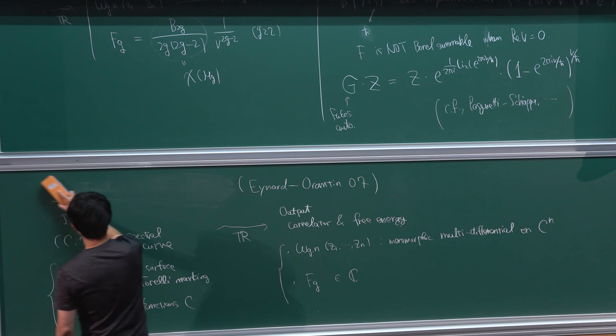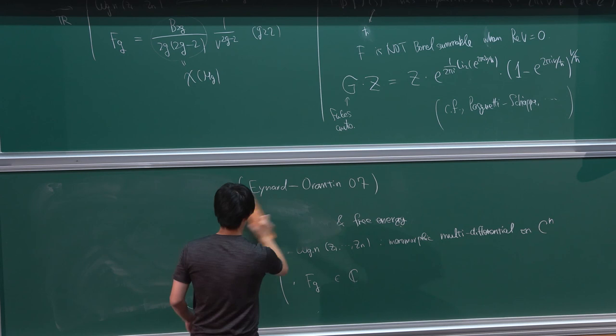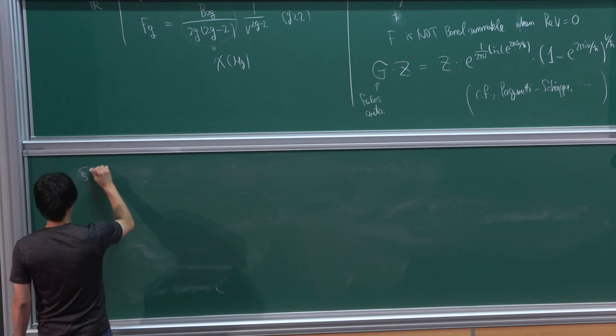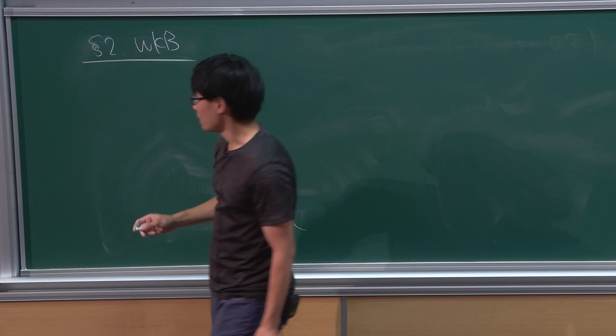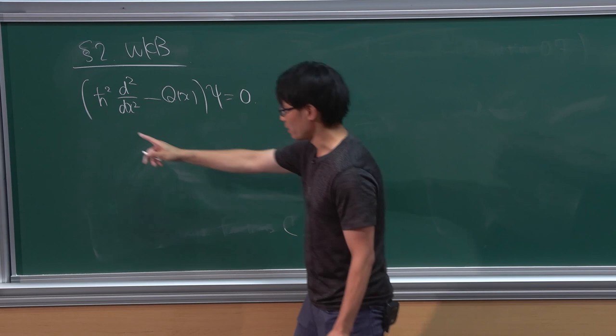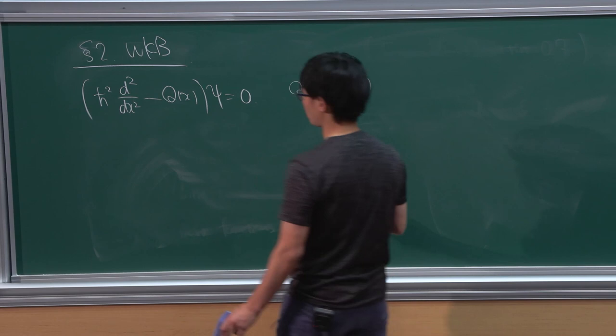WKB analysis is very closely related to the exponential integral. Today I will focus on the second-order linear ordinary differential equation of Schrödinger type: h-bar^2 times the second derivative of psi equals Q(x) times psi, where Q(x) is a rational function. We are considering a meromorphic ordinary differential equation defined on P^1.